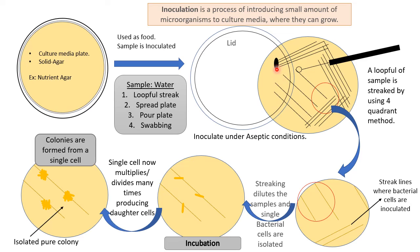If you opt for streak plate, a loopful of sample is streaked using the four-quadrant method — the standard method taught in first year. The wire loop is made of nichrome wire and is used to lightly streak on the surface of agar; you do not dig into the agar, you draw lines. While streaking, the water sample gets inoculated on the agar surface and gets diluted as you move through the second, third, and fourth quadrants.